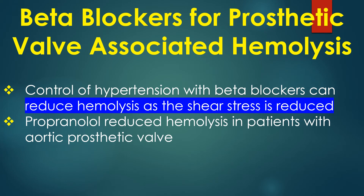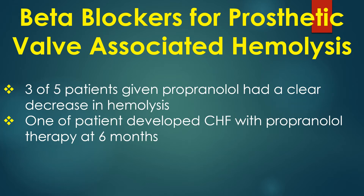Control of hypertension with beta blockers can reduce hemolysis as the shear stress is reduced. One of the earlier studies used propranolol to reduce hemolysis in patients with aortic prosthetic valve. Three out of five patients given propranolol had a clear decrease in hemolysis. One patient developed congestive heart failure with propranolol therapy at 6 months.